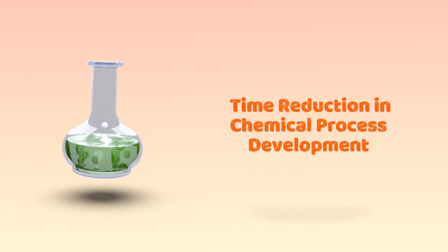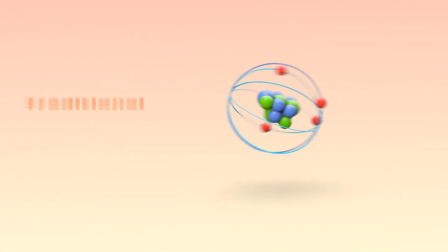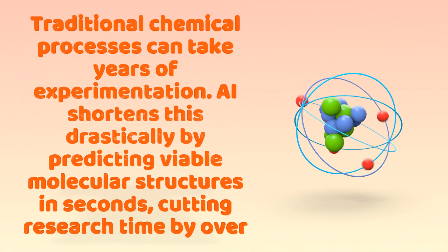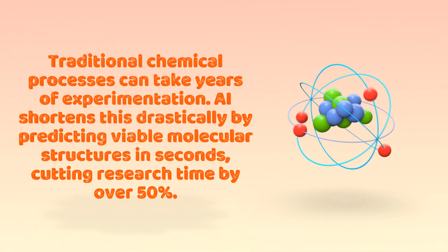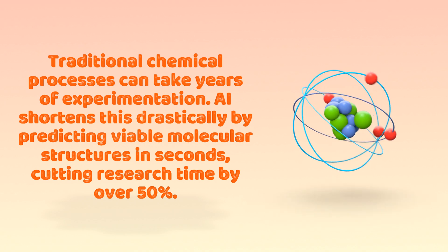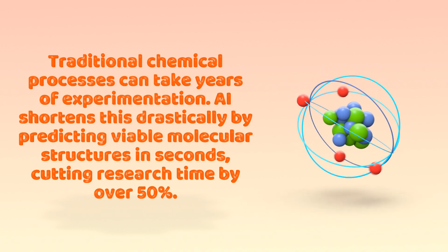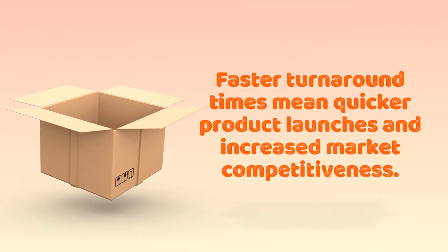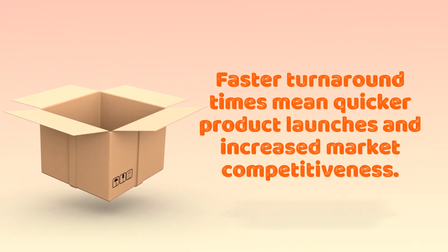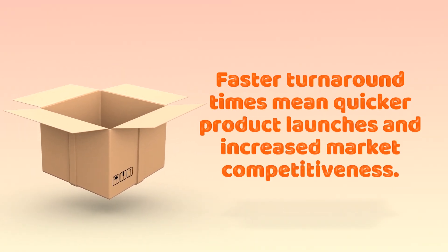Traditional chemical processes can take years of experimentation. AI shortens this drastically by predicting viable molecular structures in seconds, cutting research time by over 50%. Faster turnaround times mean quicker product launches and increased market competitiveness.